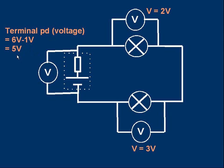If we consider the cell as supplying five volts, that equals the sum of the two volts and three volts across the other components. In general, the voltage across a supply — a battery, cell, or dynamo — equals the sum of the voltages of the other components in the loop going from positive to negative. Two plus three equals five.